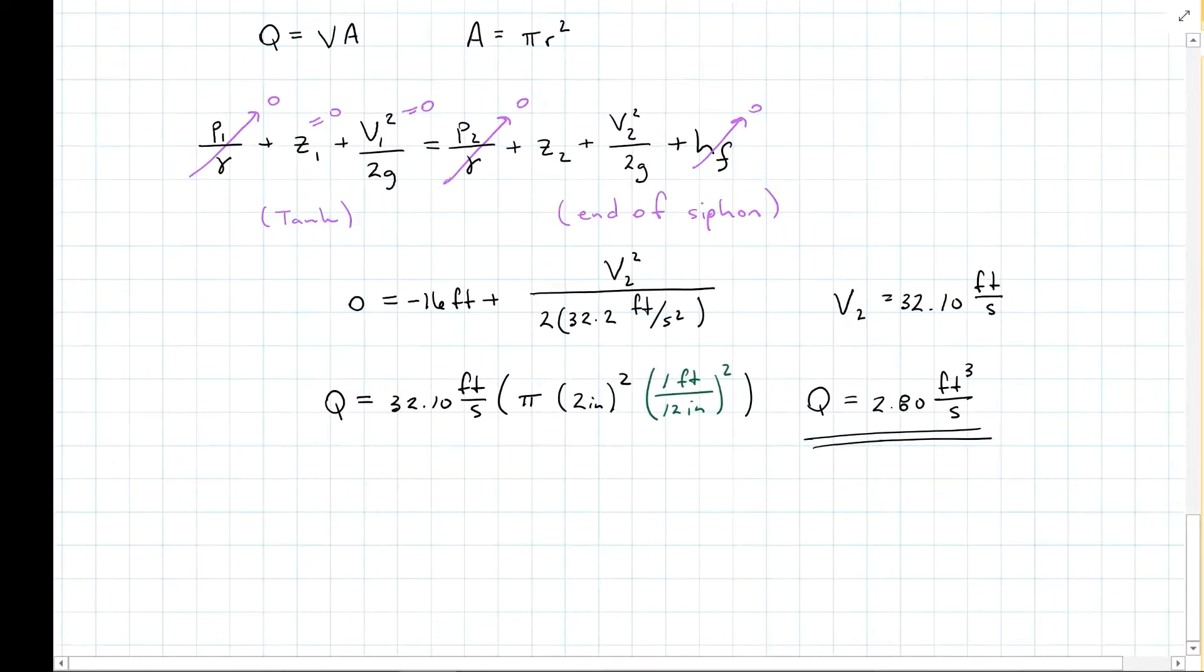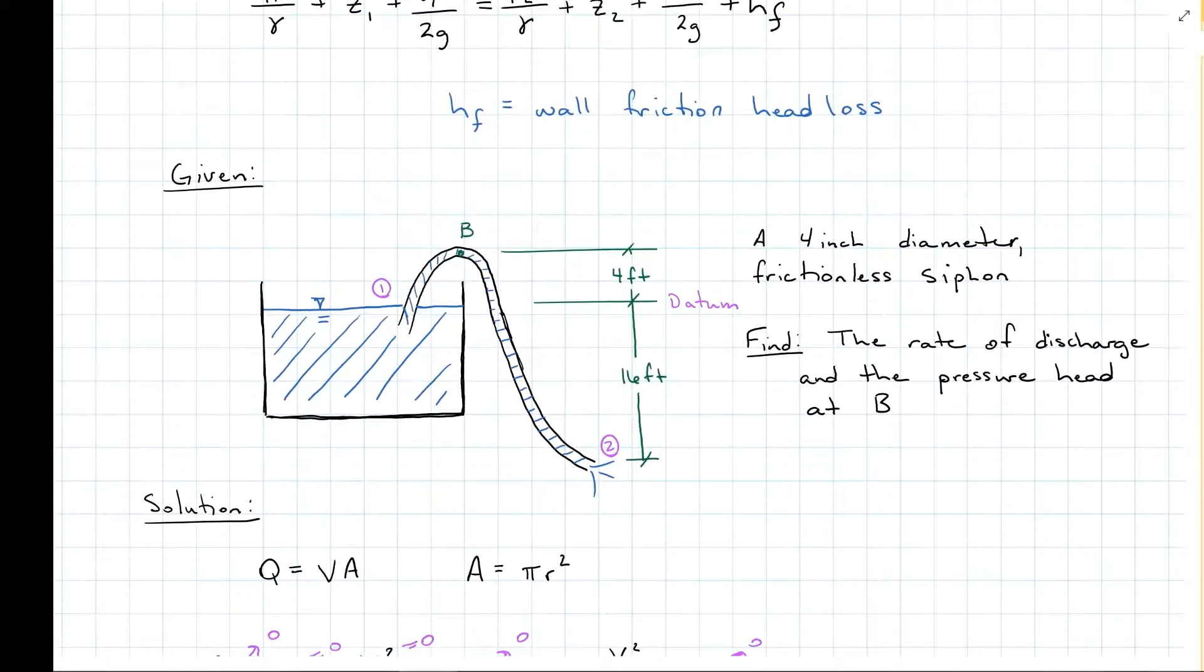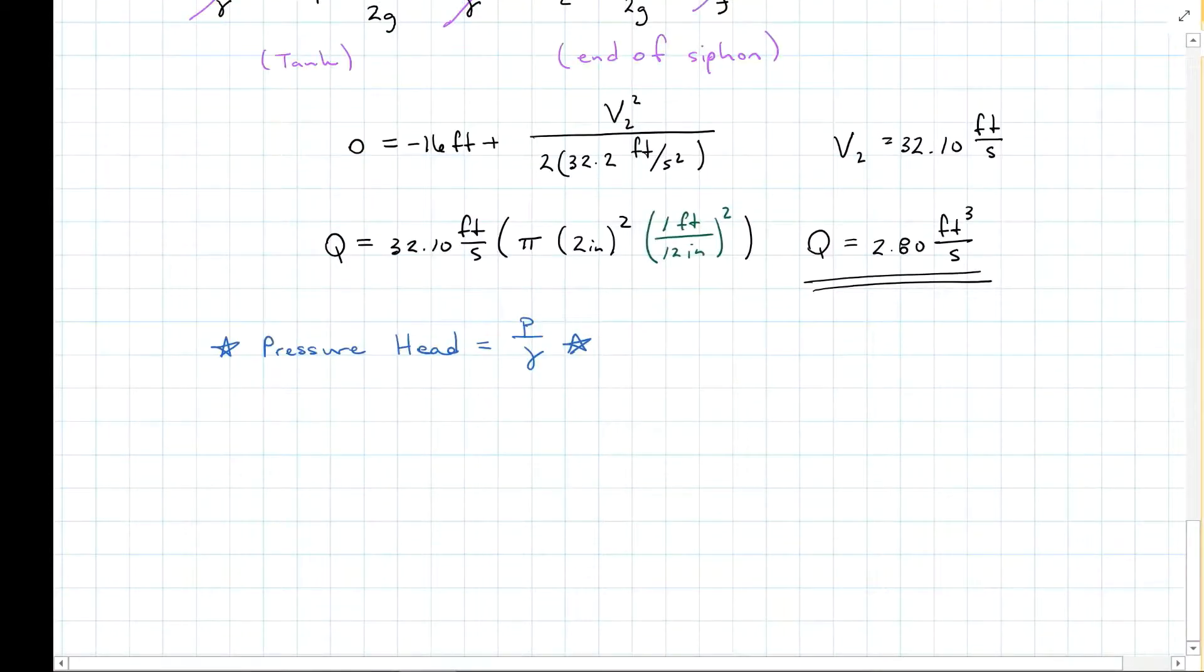For pressure head at B, we're going to have the same approach, except now I need to label it 3, and we can either go from 1 to 3 or from 2 to 3. We're going to get the same answer as long as we're consistent with our math. I'm going to go from 1 because everything's 0 and I like 0s. Pressure head, by the way, is P over gamma. Going from 1 to 3, 3 being point B, remember 1 is the reservoir, so there is no pressure because it's open to the atmosphere. That is at our datum, so we're going to start at 0. It is a non-moving reservoir, so our velocity 1 is 0.